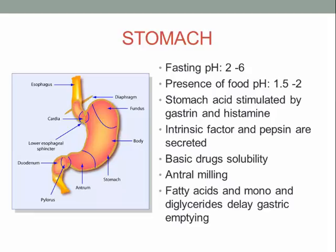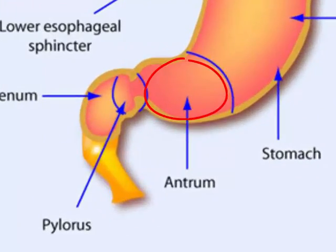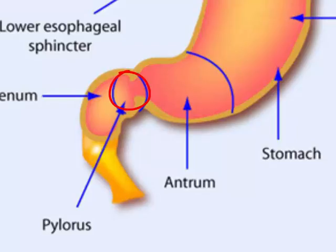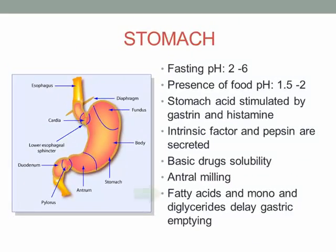Since the stomach is acidic, basic drugs can easily get solubilized in gastric acid. When the drug reaches the stomach, antral milling takes place in the antrum region. From there, it moves to the pylorus and through the pyloric sphincter into the duodenum — a process called gastric emptying. Gastric emptying is delayed if fatty acids or mono- and diglycerides are present from a meal.